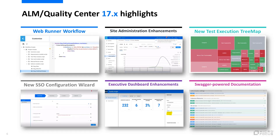In version 17, we have significantly enhanced Web Runner to include two more modules: releases and requirements. We also introduced a new workflow mechanism to customize the user actions and user interface in Web Runner. We have enhanced the new site administration to filter license usage report by projects and to show the number of connected users in each group.